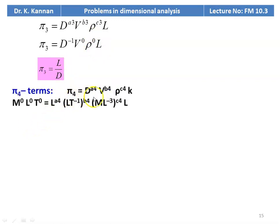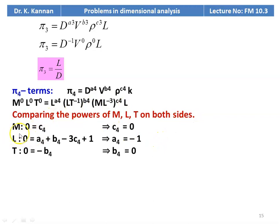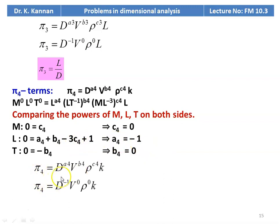For pi4 = D^a4 · V^b4 · rho^c4 · k: M⁰L⁰T⁰ = L^a4 · (LT⁻¹)^b4 · (ML⁻³)^c4 · L. Comparing powers: for M, c4 = 0; for T, b4 = 0; for L, 0 = a4 + b4 − 3c4 + 1 = a4 + 1, so a4 = −1. Therefore pi4 = D⁻¹ · V⁰ · rho⁰ · k = k/D.